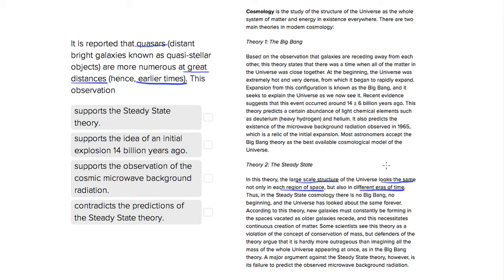So the fact that there are more numerous distant galaxies at great distances and earlier times in space, that's the exact opposite of what this steady state theory tells us. So that's not going to be good.